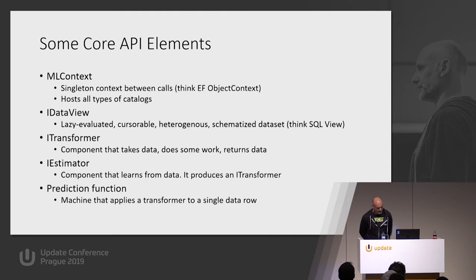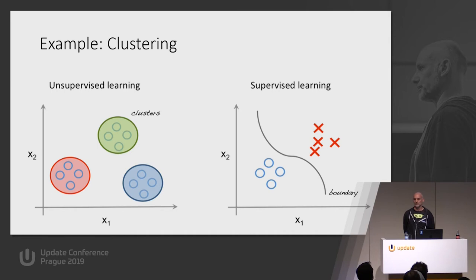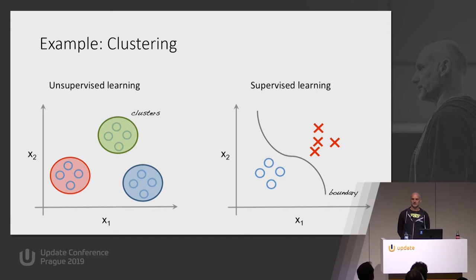Let's start with the first example: unsupervised learning — clustering. Clustering is an example of unsupervised learning, meaning I'm not going to give labels to the data. I just have a couple of dots on a chart and I'm going to ask machine learning to create groups of dots that belong together — divide the data into three groups, seven groups, that's it.